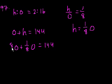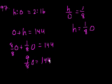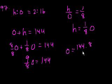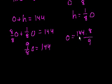Viewing 1 oxygen as 8/8, we get 9/8 oxygen equals 144. So oxygen equals 144 times 8/9. Does 9 go into 144? Yes — 9 goes into 144 sixteen times.